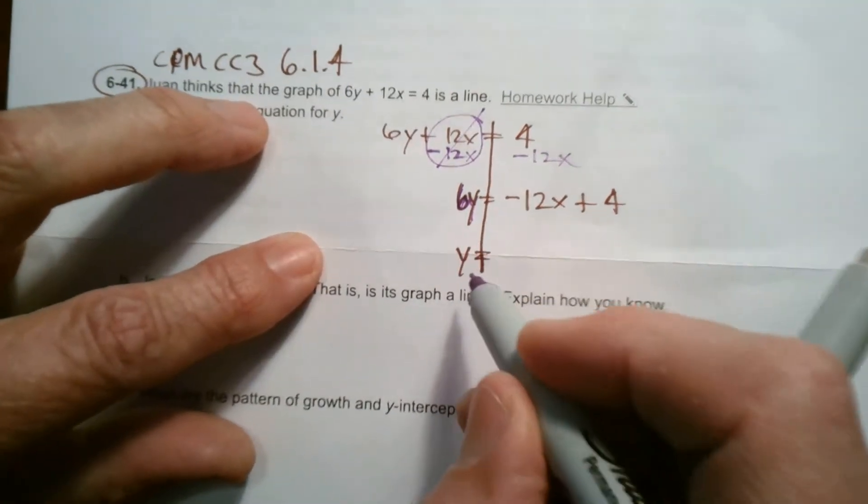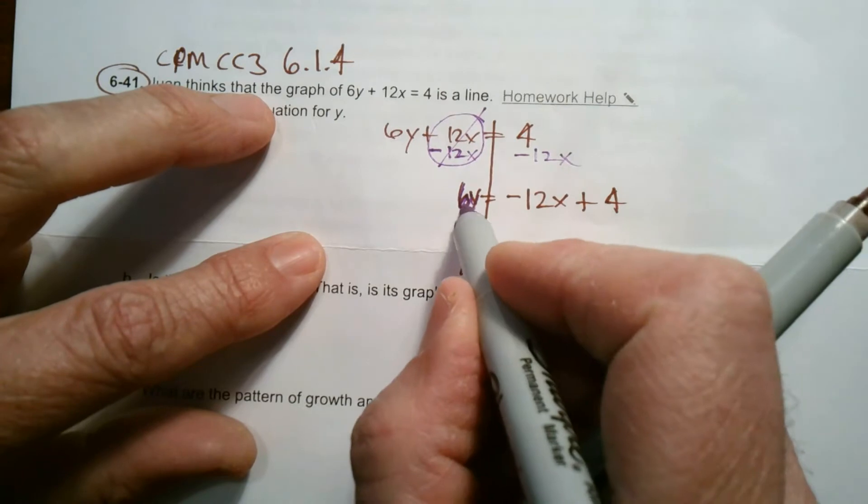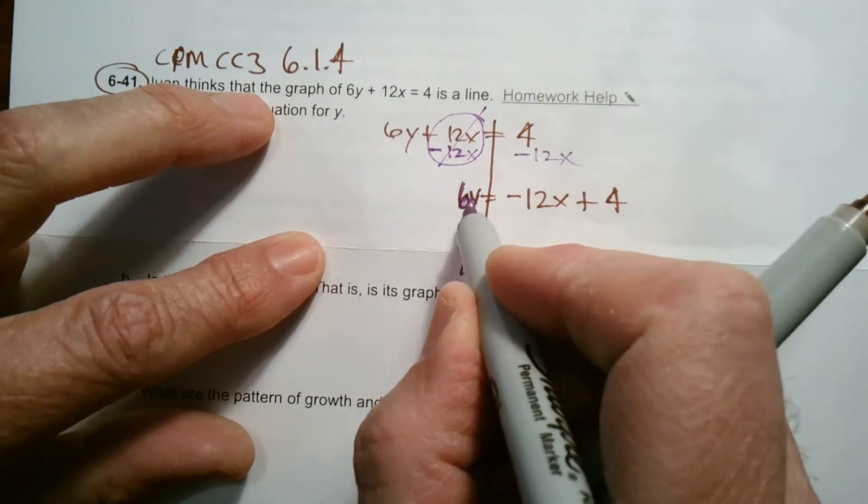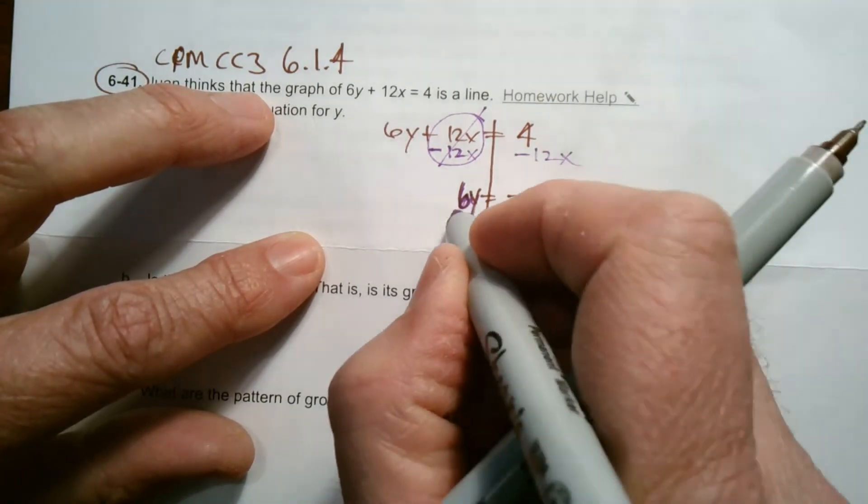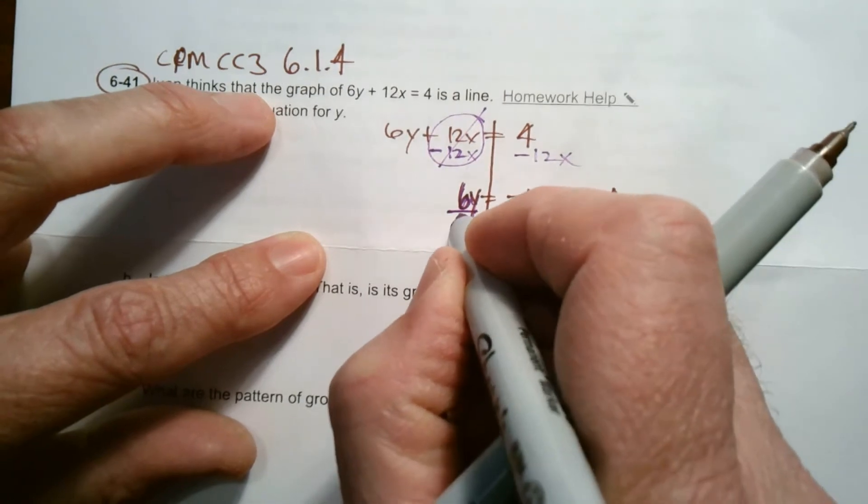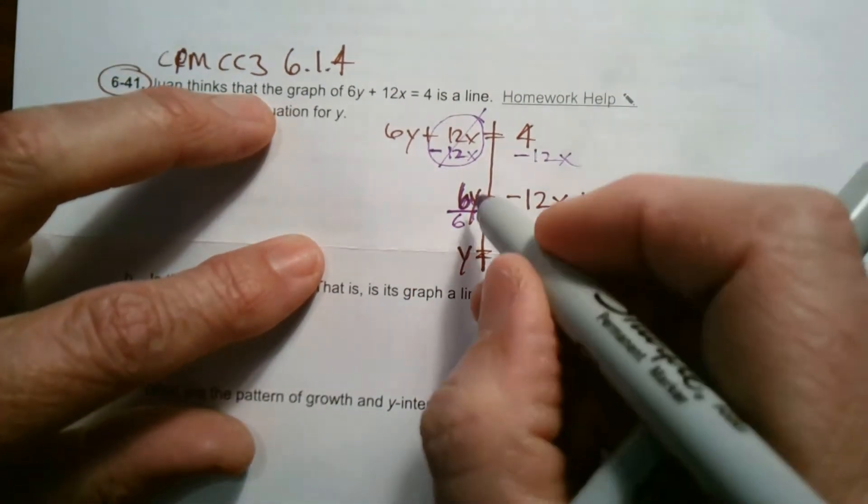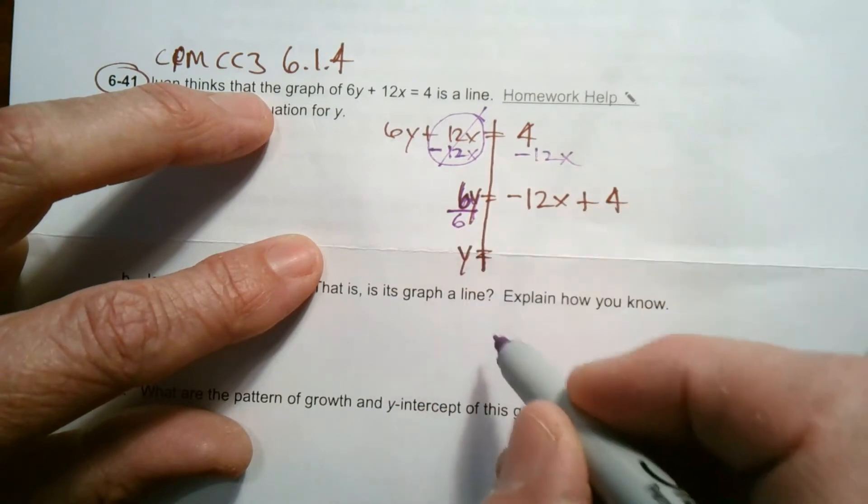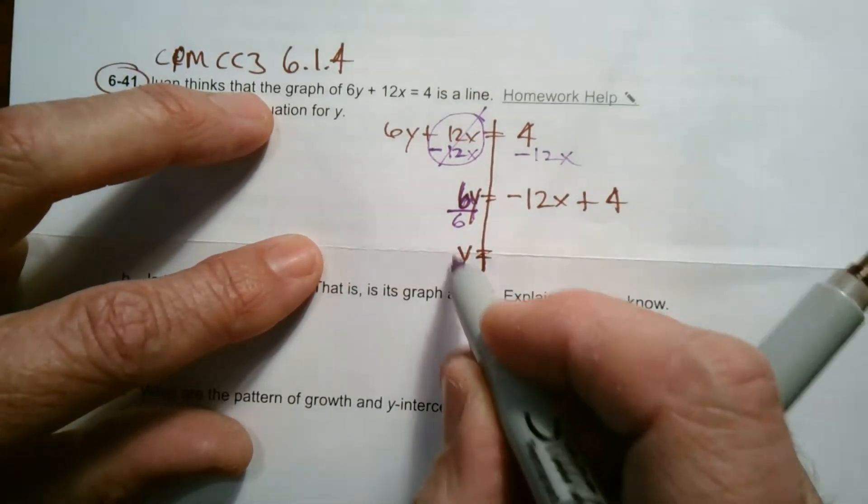Now I got to get this y all by itself. So that means I got to get rid of the 6. What is the 6 doing to the y? The 6 is being multiplied to the y. So the inverse operation, the opposite operation, is divide. So I divide by 6. 6 divided by 6 goes away, it's a 1. That's what I want. I want 1y.